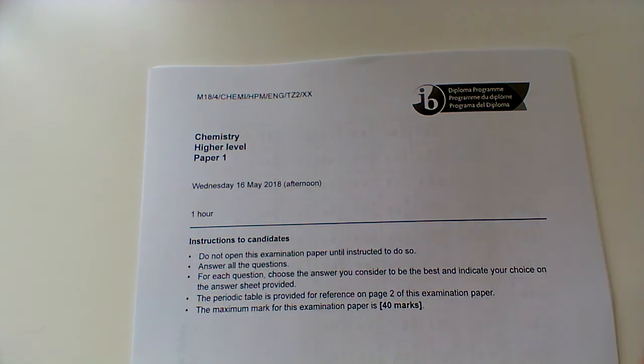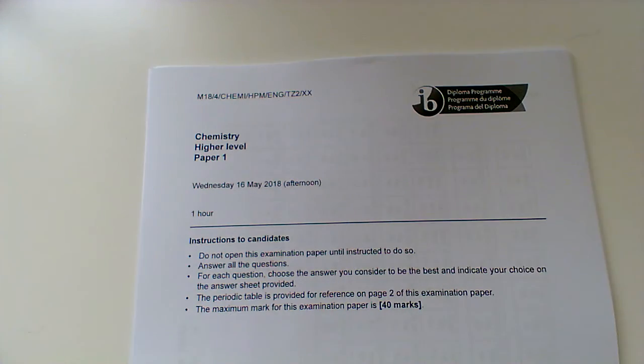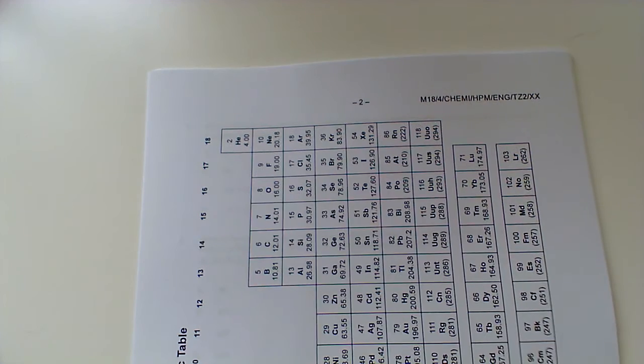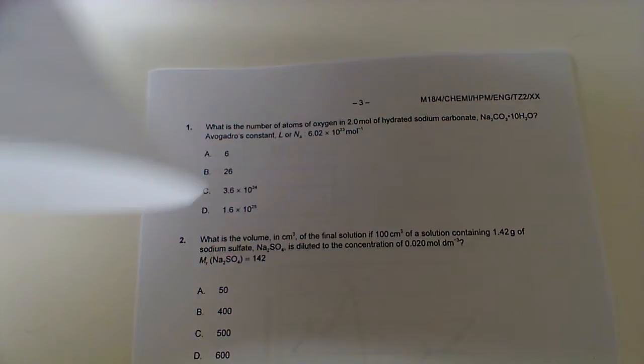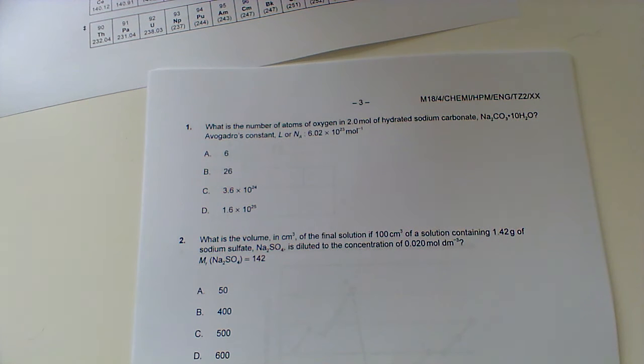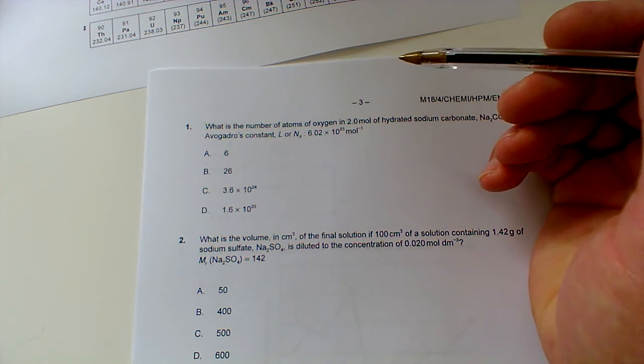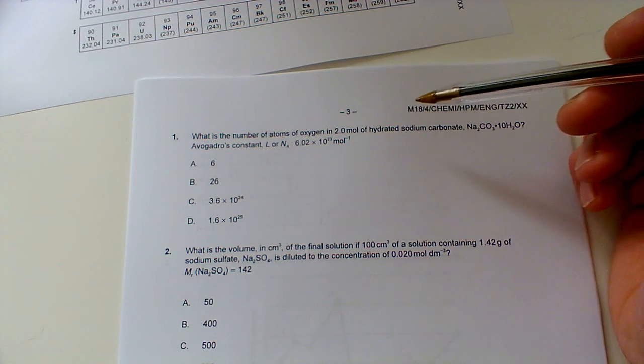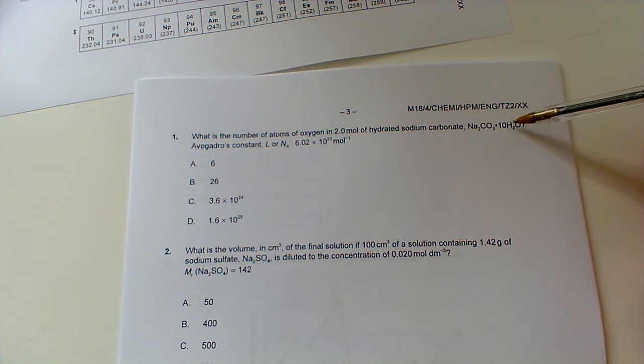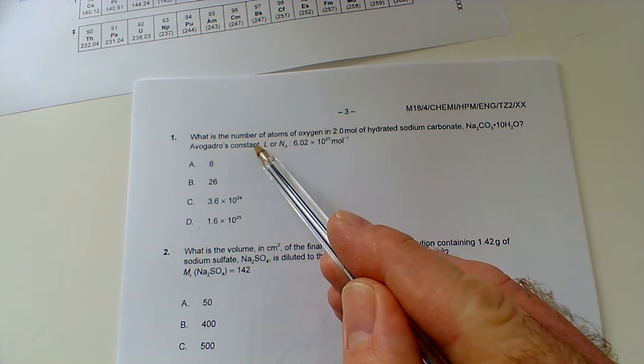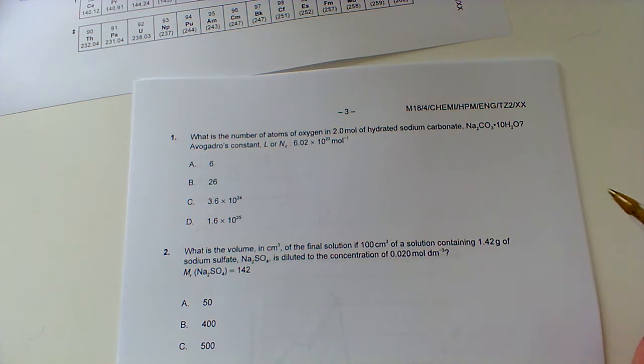Okay, so this is Time Zone 2, May 2018, the Higher Level Paper 1 for Chemistry. So here we go to the table, put that out the side. And questions 1 to 10, here we go. What is the number of atoms of oxygen? I'm going to get my calculator.